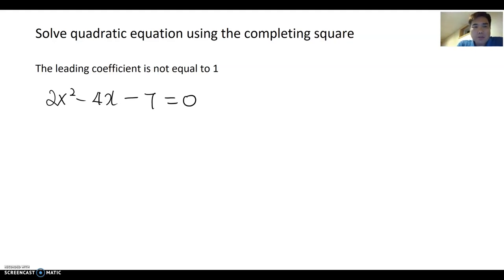We will continue to solve the quadratic equation using the completing square method. This time, we focus on talking about if the leading coefficient is not equal to 1. So look at this example here: 2x squared minus 4x minus 7 equal to 0.